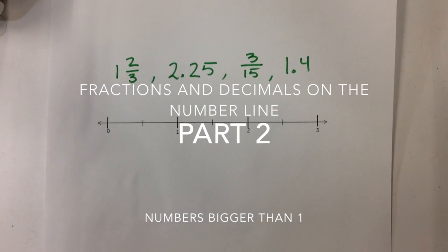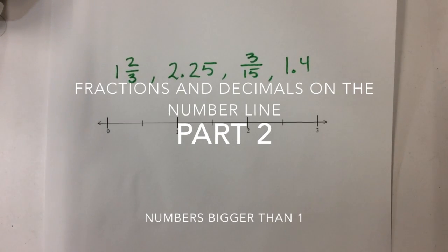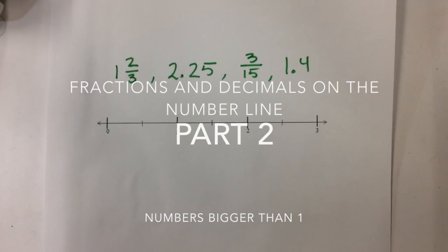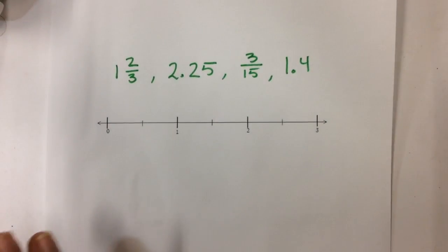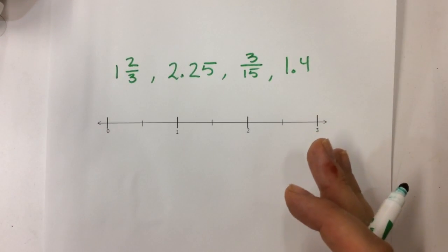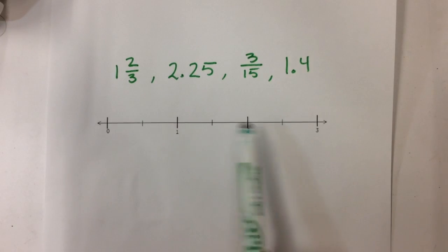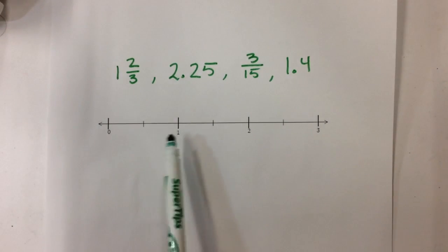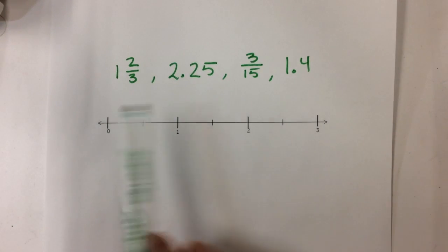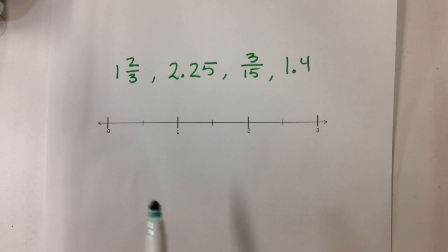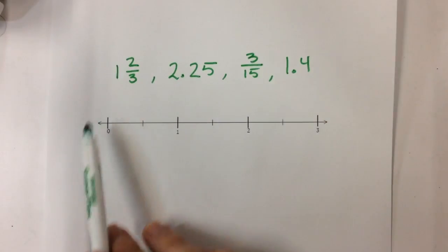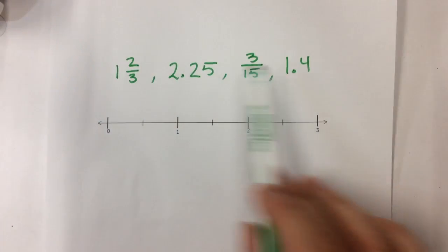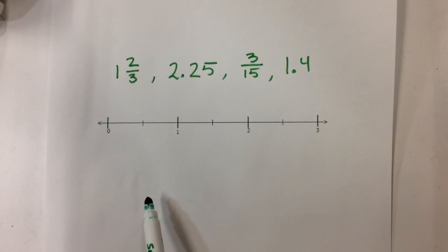Not all the problems you do are going to be on a number line between 0 and 1. Sometimes you might have a number line, like in this case, where it's between 0 and 3. You're going to have to figure out where these numbers go in relation to the marks. We're going to do similar steps: first convert the fractions into decimals, then identify the points on the line, then place the numbers.